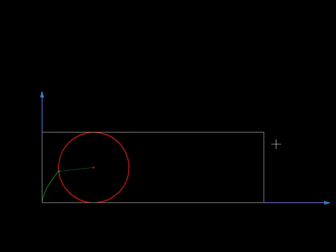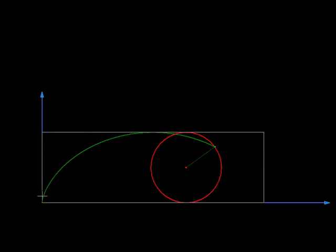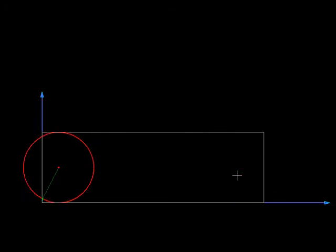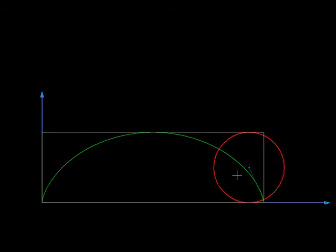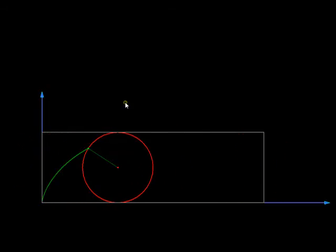Now rectangle and circle are easy but to find the area under the cycloid we typically need calculus and Mamikon's theorem helps us find it without calculus. So let us see how. For that we are going to freeze this motion of the circle and let us look at this point G over here which is in contact with the ground.